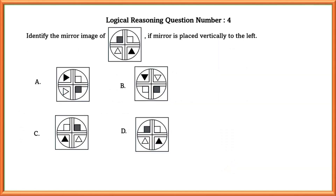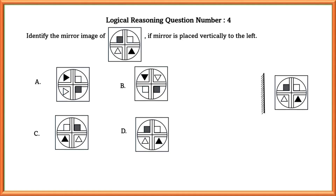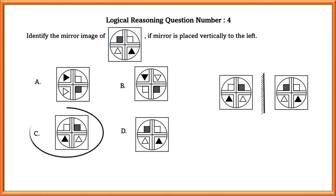Logical reasoning question number four: identify the mirror image of the given figure if the mirror is placed vertically to the left. Placing this figure in the mirror vertically to the left, we can see that an image appears which is the same as option C.